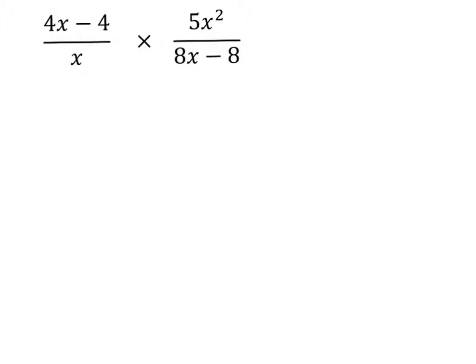The first step is to break this problem down. The numerator on top breaks down into 4 times x minus 1, and that's over x. The second numerator breaks down into 5 times x times x.